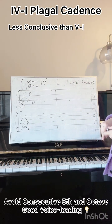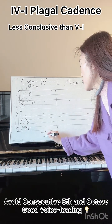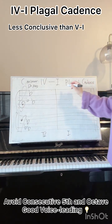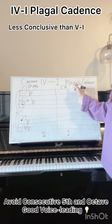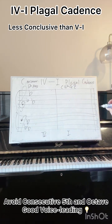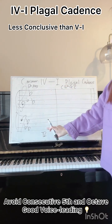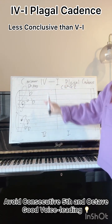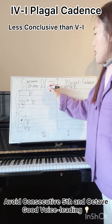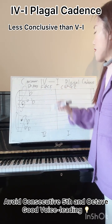Now we're going to find the core tones of the tonic triad, which is C, E-flat, G, C. And now we ascertain the core tones of the subdominant triad of C minor, which is F, A-flat, C, and F.